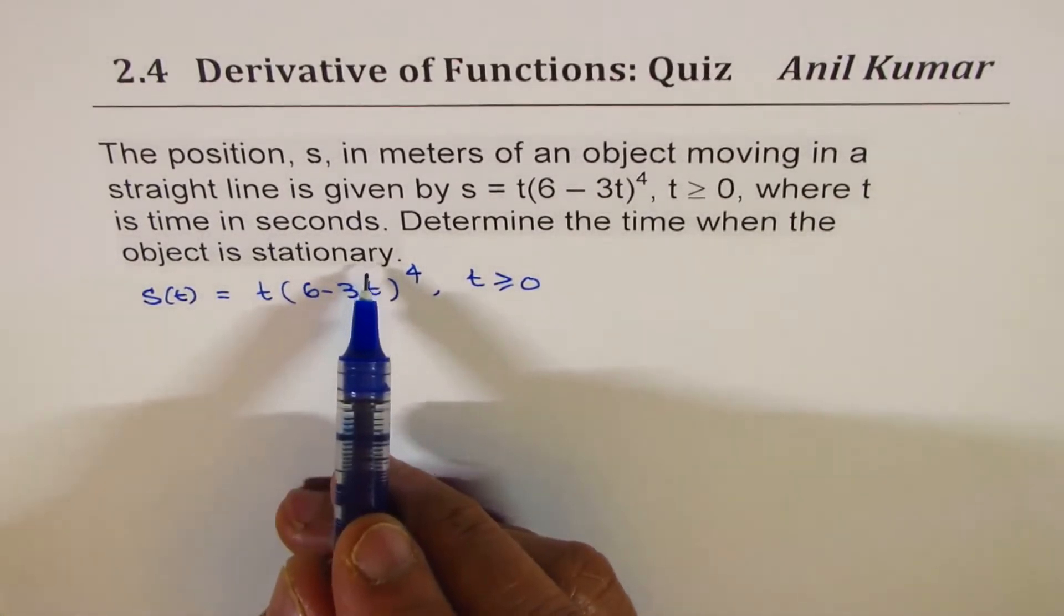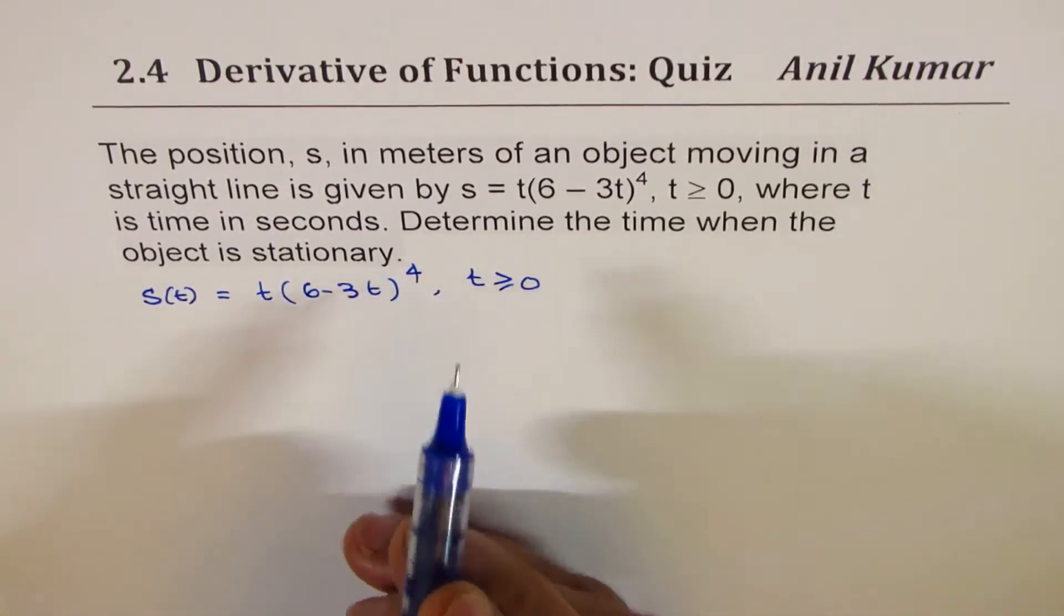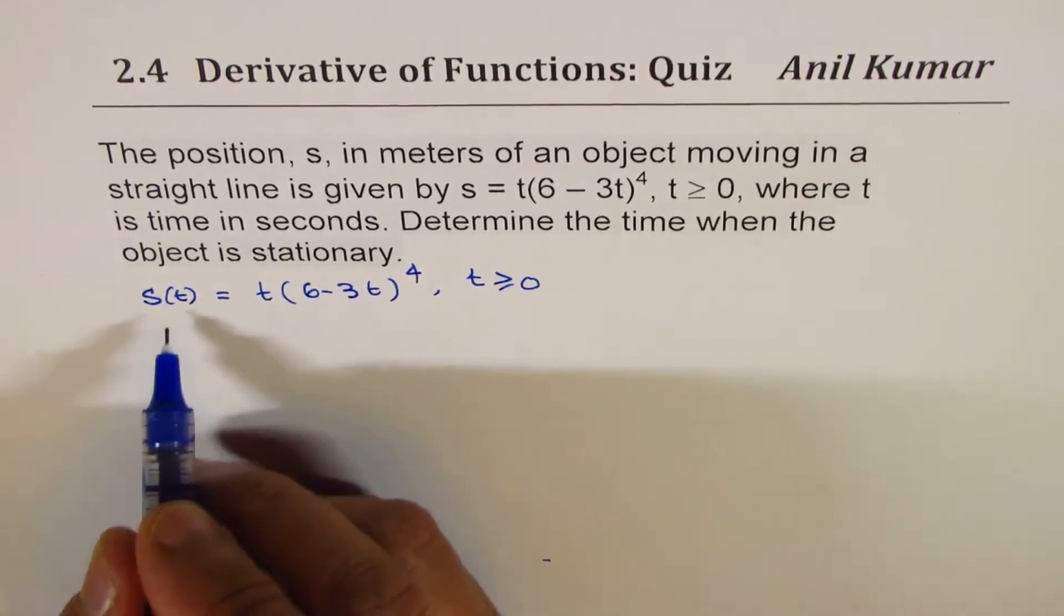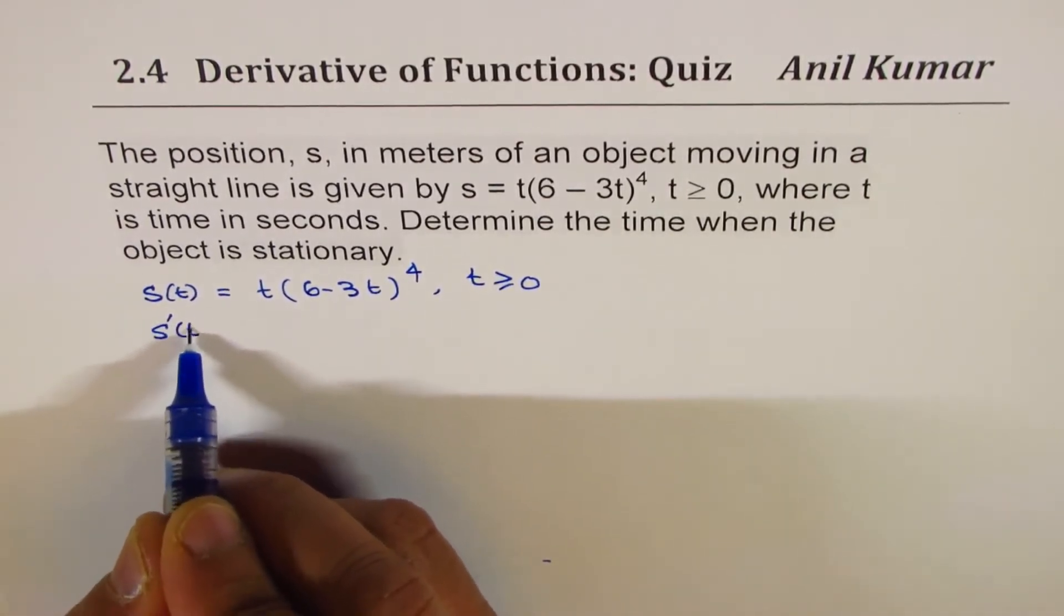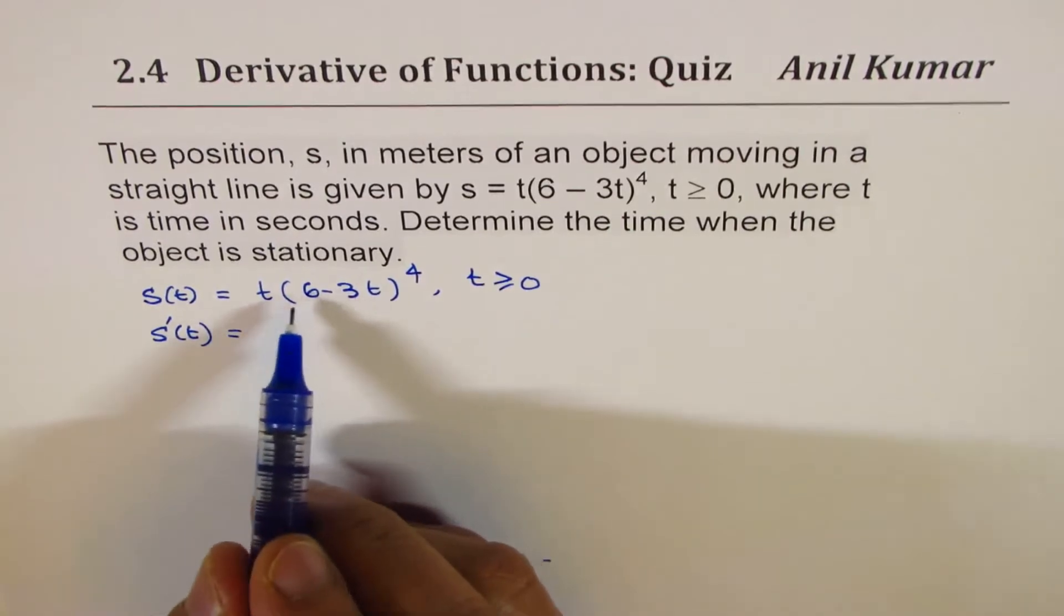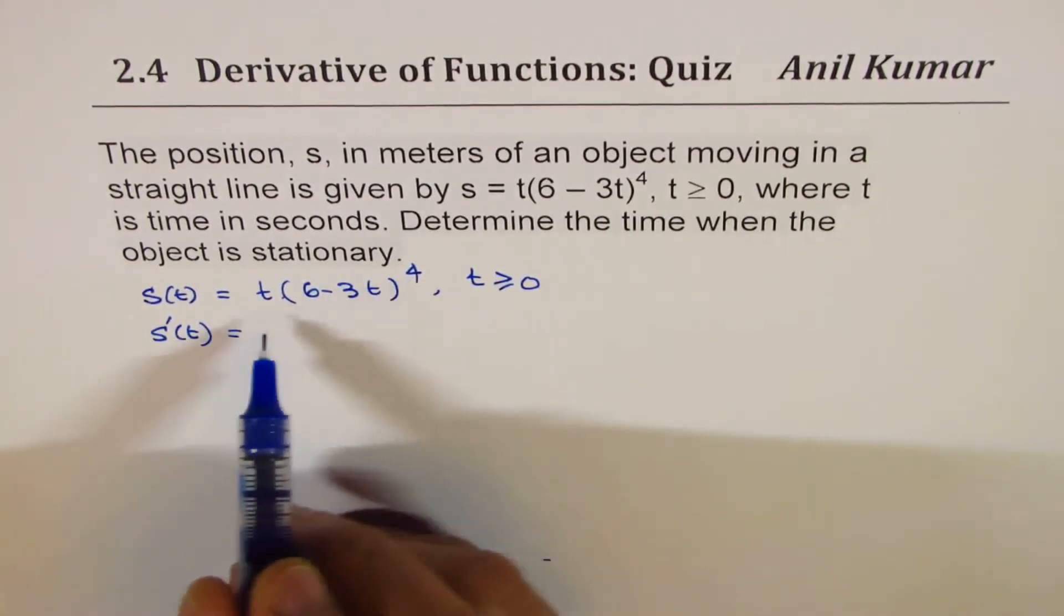Stationary object means zero velocity, so let's first find rate of change of displacement. Rate of change of displacement is velocity. Here we can apply the product rule.